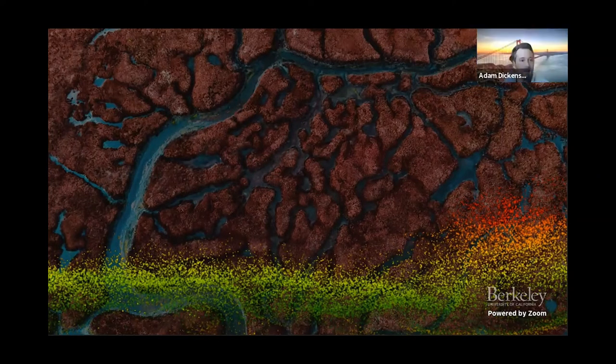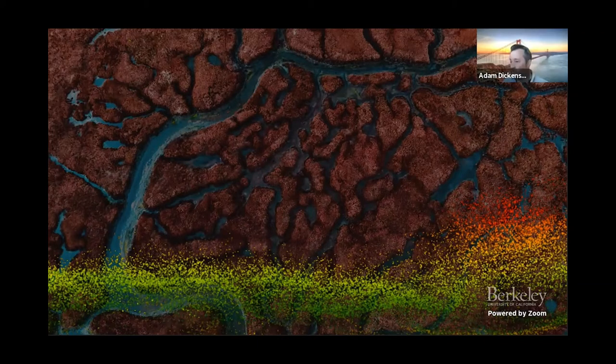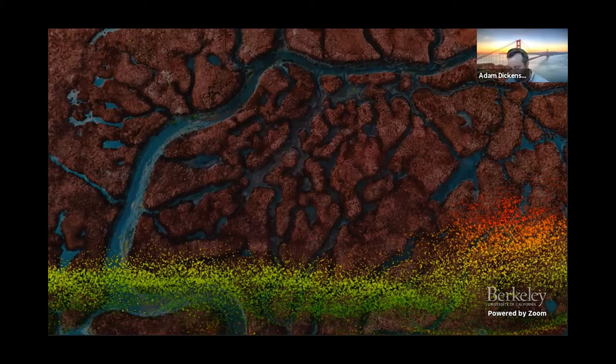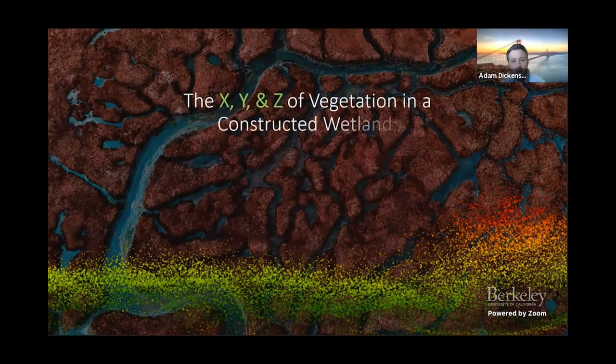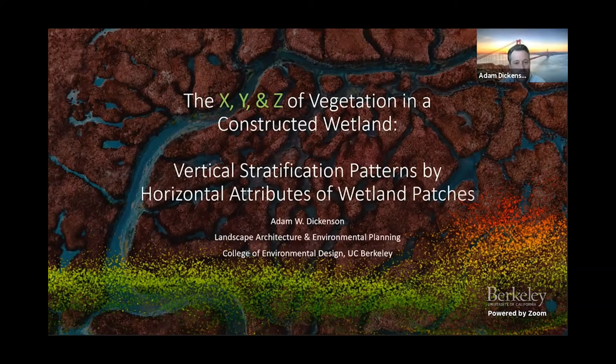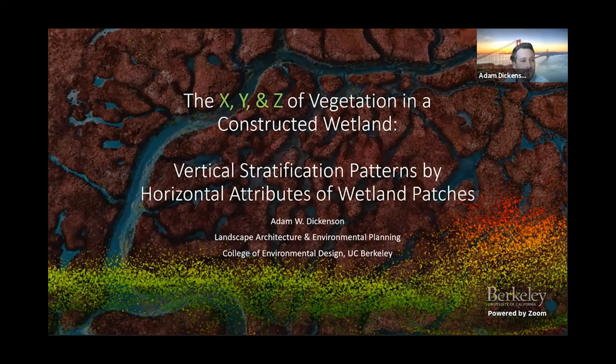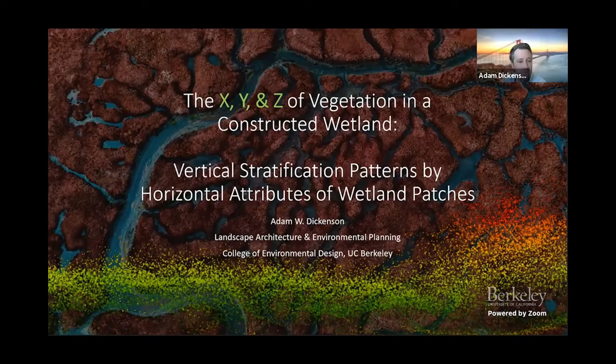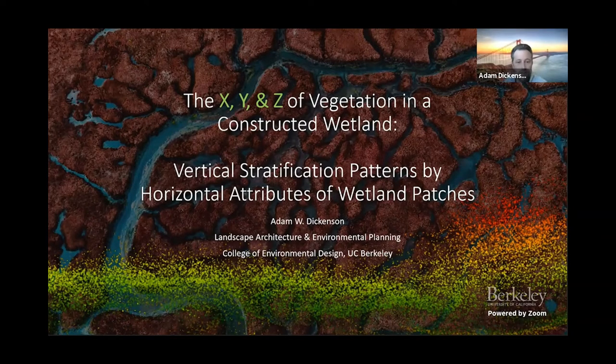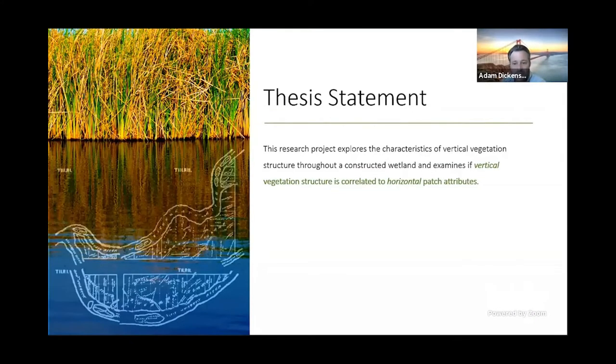Welcome back and thank you everyone for being here. I will jump right into it. My name is Adam Dickinson and my project is the X, Y, and Z vegetation in a constructed wetland: vertical stratification patterns by horizontal attributes of wetland patches. My research is exploring the characteristics of vertical vegetation structure throughout a constructed wetland and examines if vertical vegetation structure is correlated to horizontal vegetation structure.